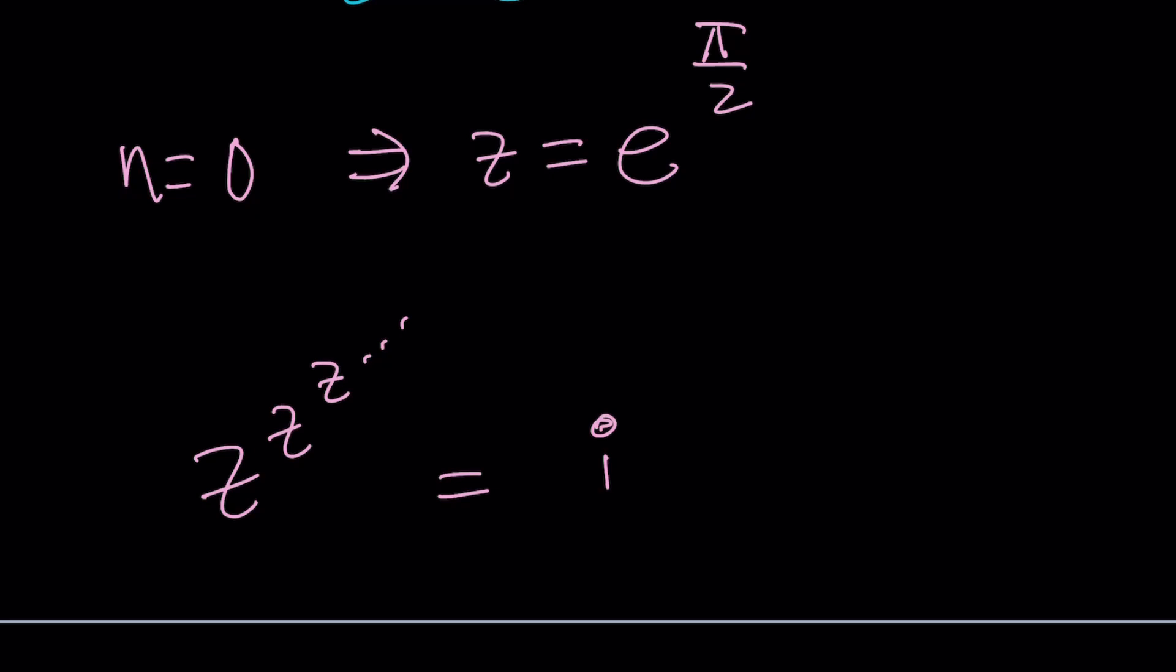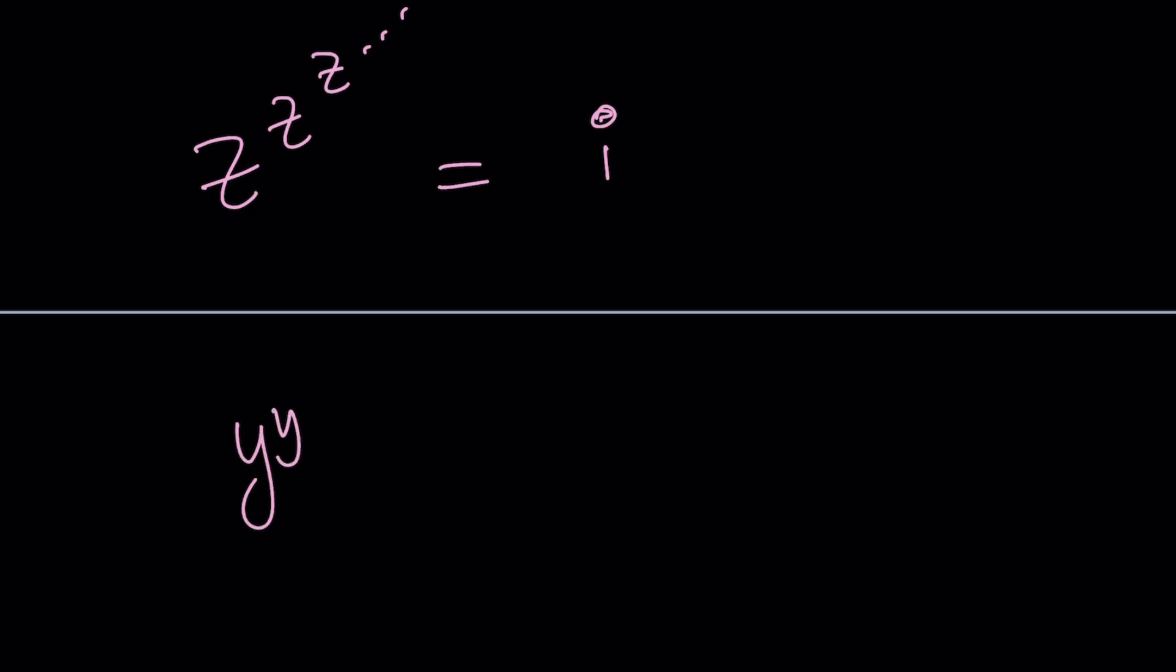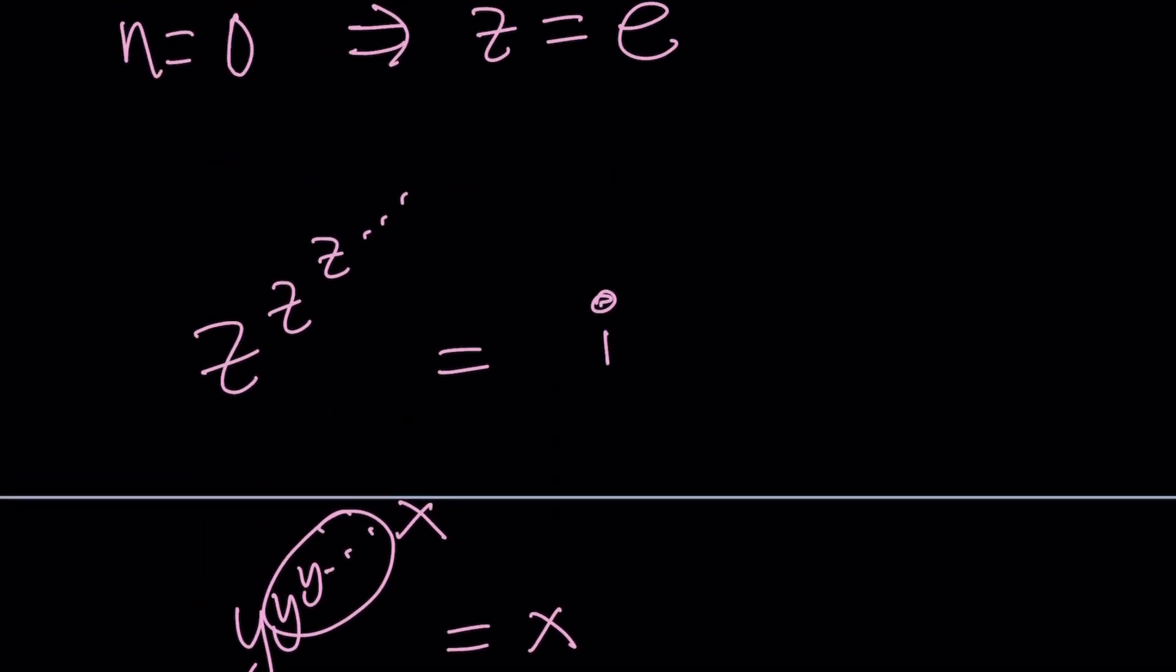This has something to do with the convergence of something like y to the y to the y if you set that equal to x. Call this x because that's the same thing. And then you get y to the x equals x which implies y equals x to the power 1 over x. And now look at the derivative of this function. Look at the maximum minimum so on and so forth and hopefully you'll get a better idea what is going on here. Obviously this is not real. Is this for real? No. It is for complex numbers and imaginary numbers. Great.